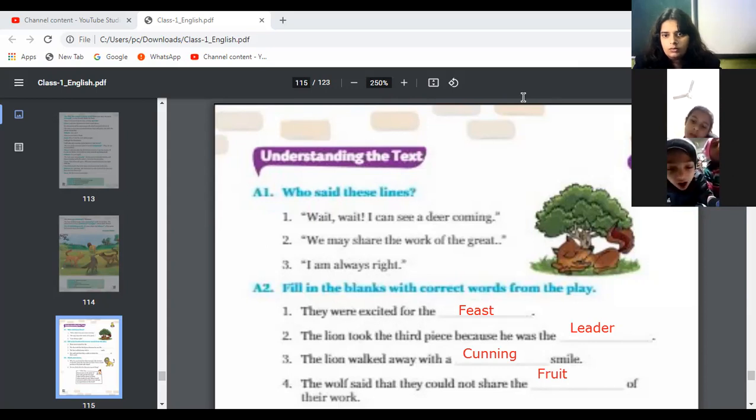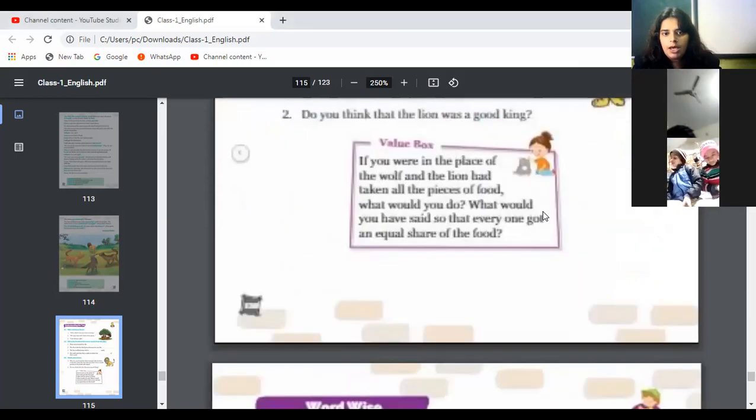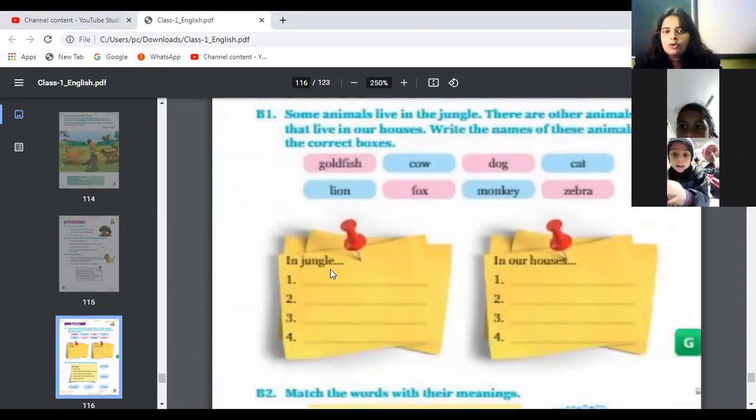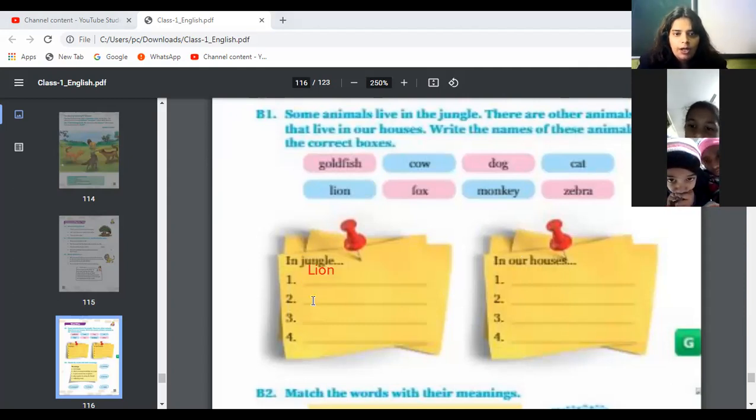Come to the next page, page 21. So, we will start writing. In jungle, we can see lion. Write their lion. Second one, monkey. Third one, zebra. Fourth one, it will be fox.